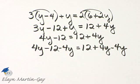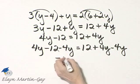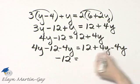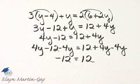4y minus 4y, that's 0y or 0, and I have negative 12 is equal to, this subtracts out also, and I have simply 12.